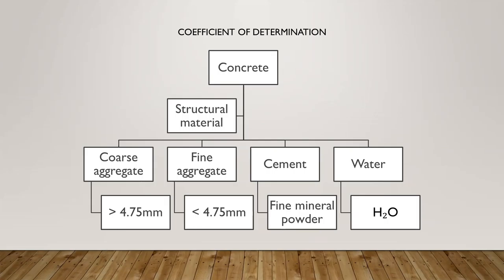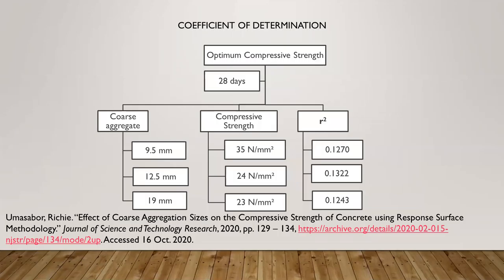Aggregates are divided into groups. Coarse aggregate refers to those rocks bigger than 4.75 mm, and fine aggregate includes rocks less than 4.75 mm. Concrete is one of the most important structural materials for construction. The full material must be balanced or it can affect the workability. Aggregates are very important because they constitute more than 70% of the composition of concrete.